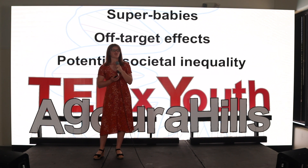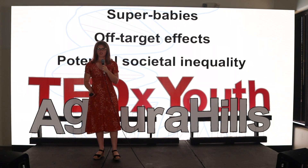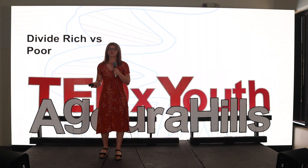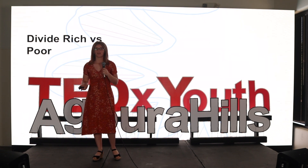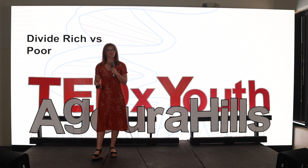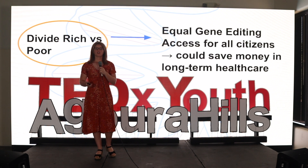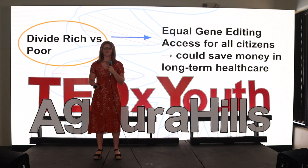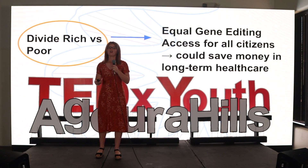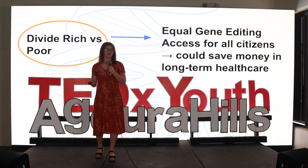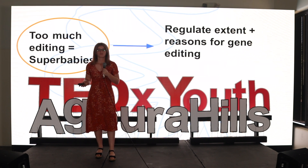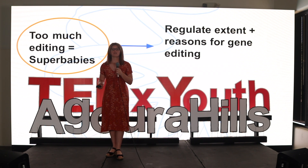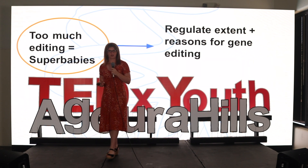Gene editing could be seen as controversial due to fears surrounding super babies, off-target effects, and potential societal inequality. Specifically, there could be a division between the rich who would edit their children and the poor who are then automatically inferior. However, there are ways this problem could be reduced. For example, there could be equal gene editing access for all citizens in the future, which could save millions in long-term healthcare costs for chronic genetic or immune diseases. Additionally, scientists can regulate the extent and reasons for gene editing to ensure it is only used for specific therapeutic reasons in the effort to make a healthier individual.